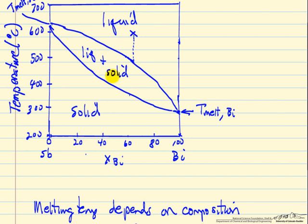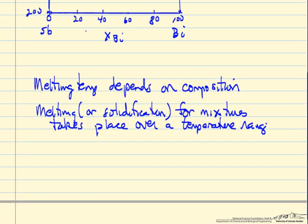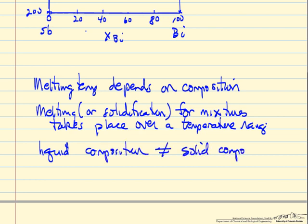A couple of things that are important to note: the solid that forms has to be at the same temperature, and the composition of the solid is quite different from the composition of the liquid. When we have liquid and solid at equilibrium, the liquid composition does not equal the solid composition. Liquid and solid at equilibrium have different compositions.